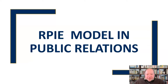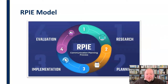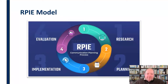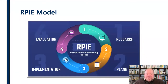I want to take a look at the RPIE model in public relations — a method of explaining what the full process of a public relations strategic communication campaign looks like. The RPIE model is very simple: it's Research, Planning, Implementation, and Evaluation. We're going to walk through each of these, although they are all interconnected and work together extensively. This is not inherently superior to ROPES or RACE; it's just the one I choose to use.